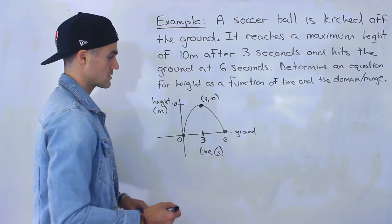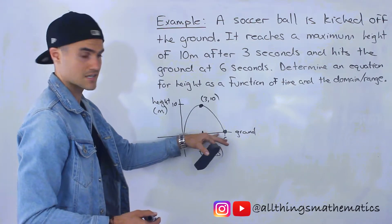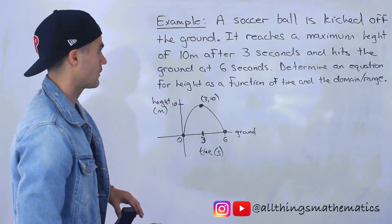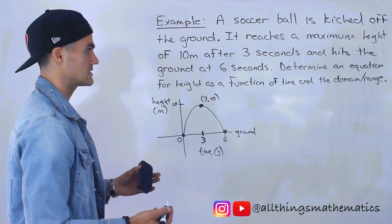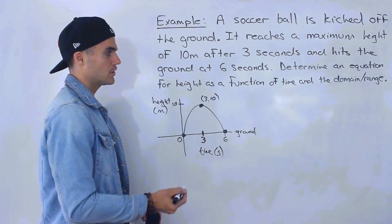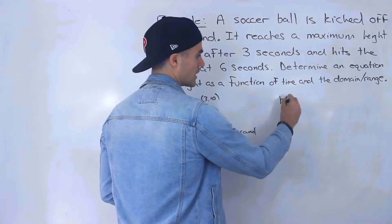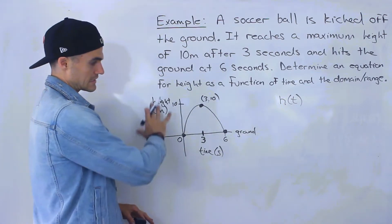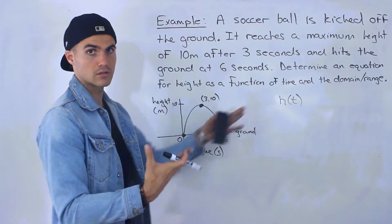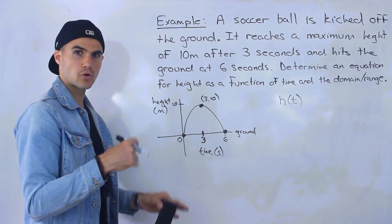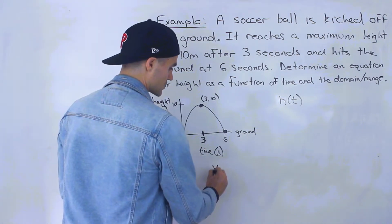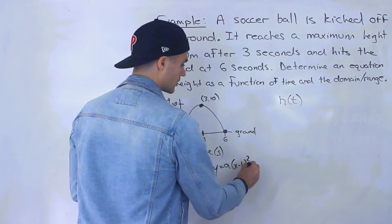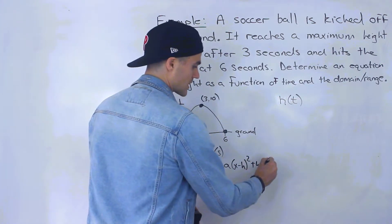The ball hits the ground at 6 seconds, so h = 0 at t = 6. This is the graph of the scenario. We have to determine an equation for height as a function of time — h(t). This is a parabola, so we know the equation is going to be a parabola. We can write it in vertex form: y = a(x − h)² + k, where the vertex is at (h, k).